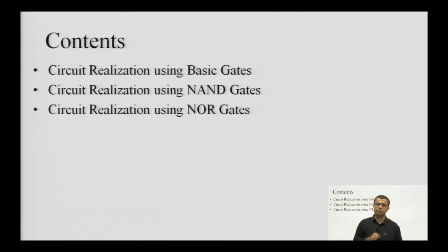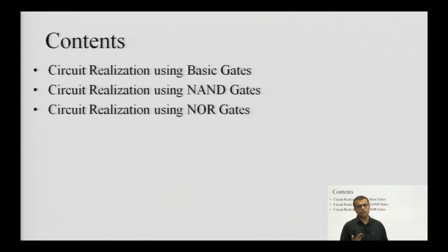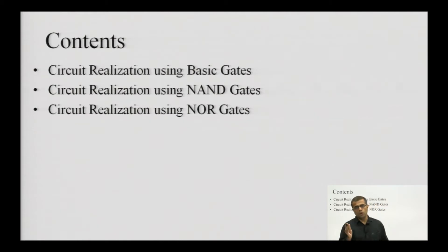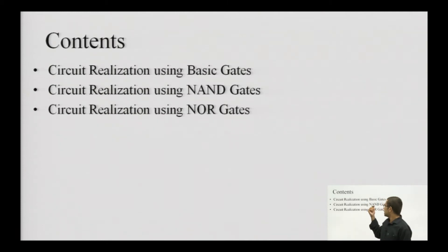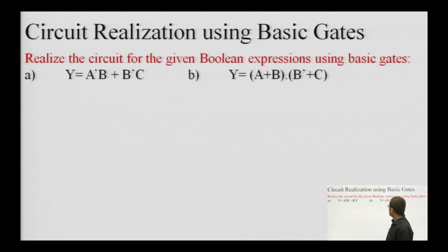There are three ways by which this can be done in the form of gates. From the scope of unit 1, these are the three methods. As we proceed to unit 2, we will see other methods to realize circuits using specialized circuits like multiplexers and demultiplexers. From the scope of unit 1, the three methods are: circuit realization using basic gates, circuit realization using NAND gates, and circuit realization using NOR gates.